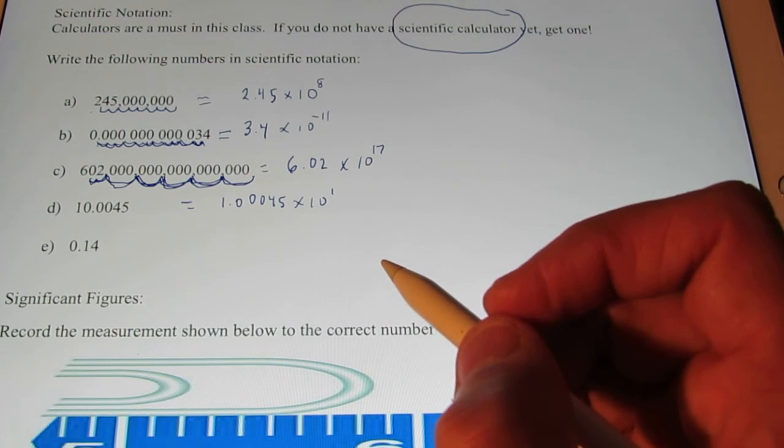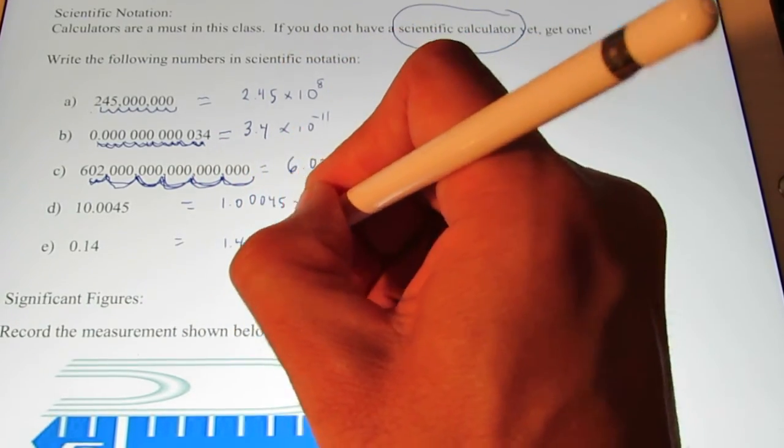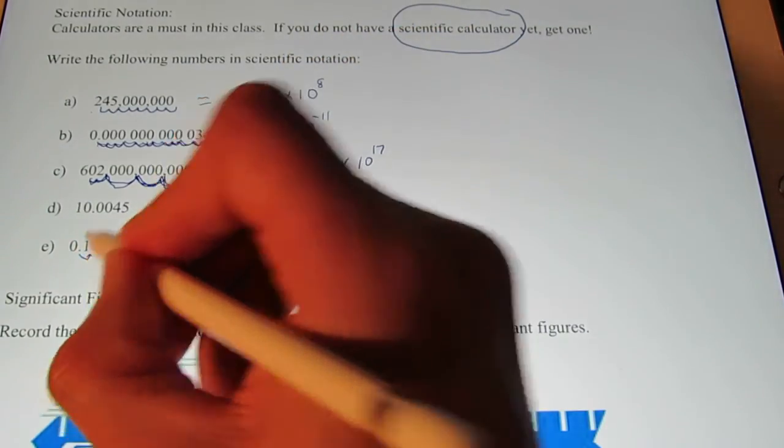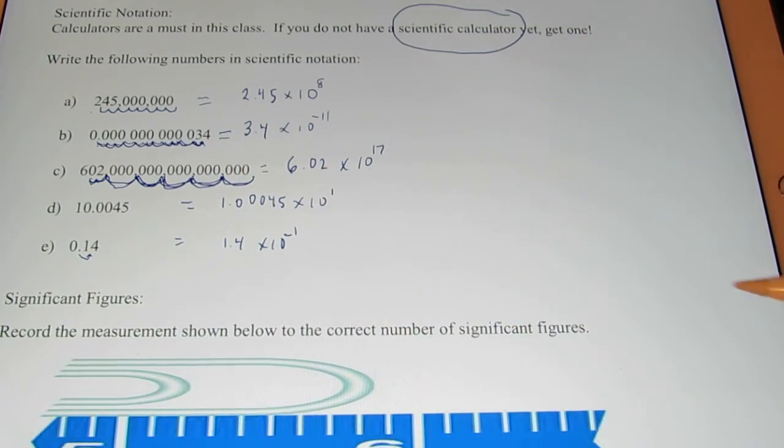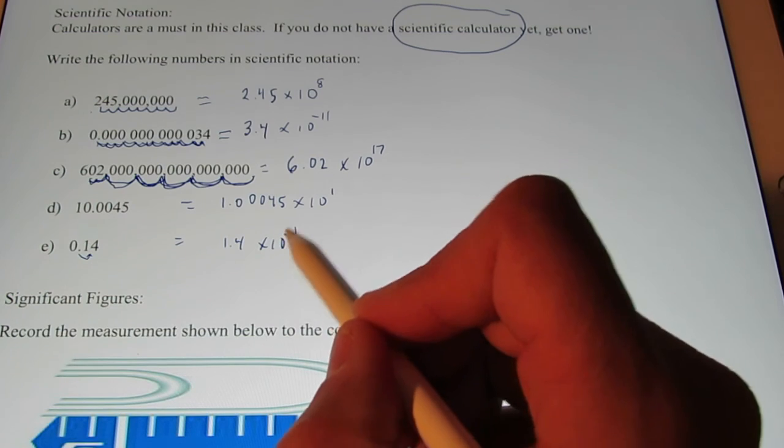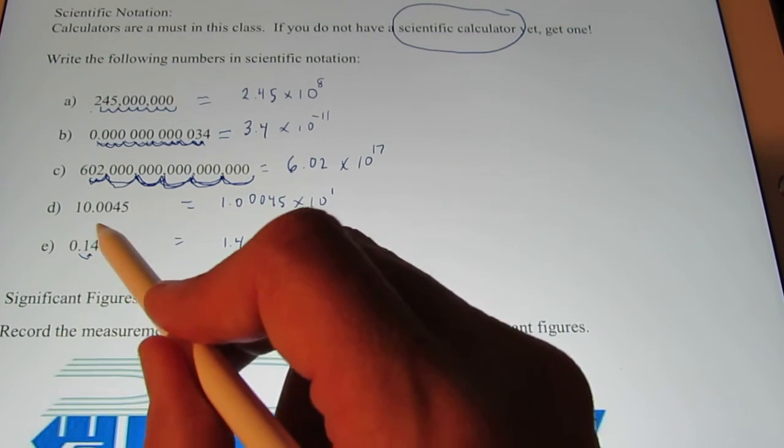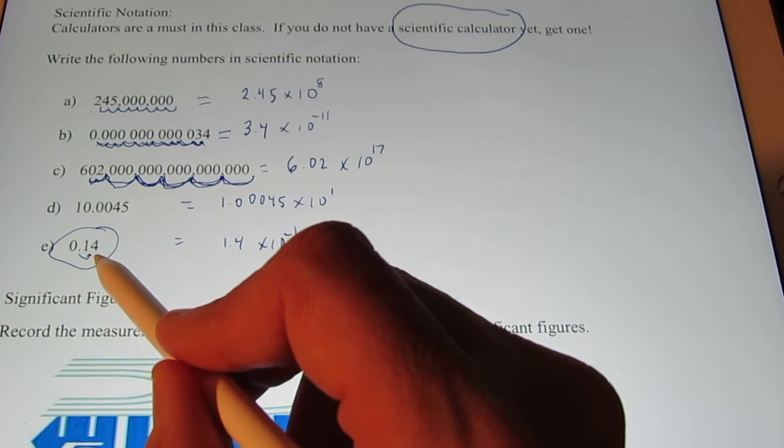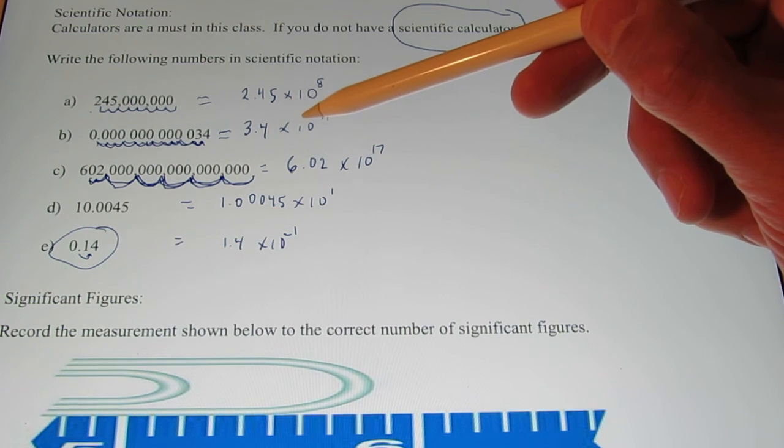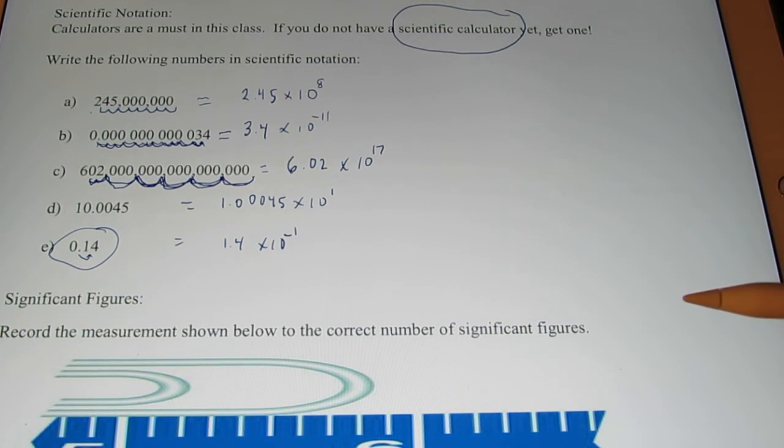All right, how about 0.14? Did you guys choose 1.4 times 10? Looks like I had to move it over one place to the negative first. And this is another situation where using scientific notation probably is not very helpful. We'd probably just write this number as it's written down. We probably would not use scientific notation for a number like that. But when they're really, really big, like these two, or really small, scientific notation is helpful.